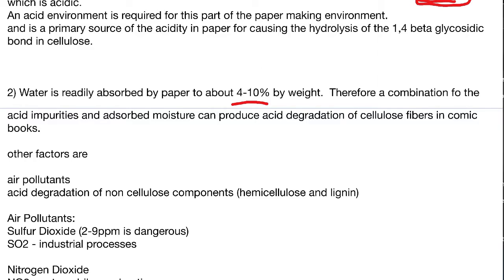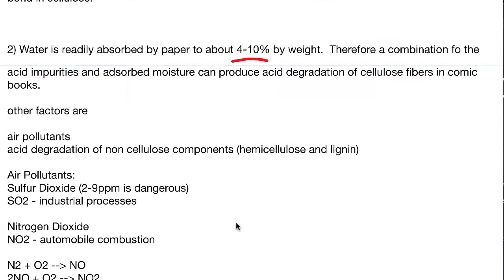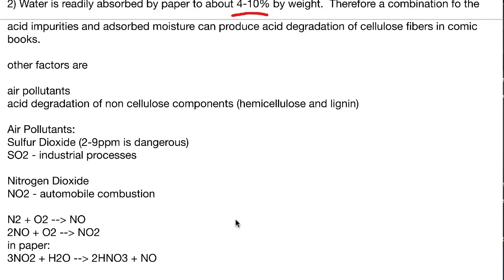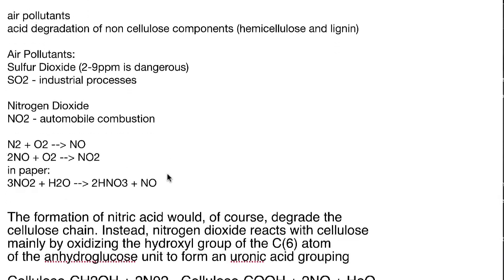Other factors include air pollutants. Some of the major sources are sulfur dioxide, usually from industrial processes, which makes sulfuric acid. If you live in a city with a lot of industrial processes, SO₂ levels can easily be significant, but if you don't live in a big city you're probably not going to be in the two to nine ppm range.